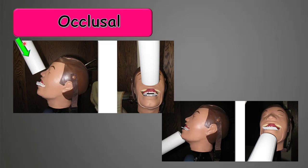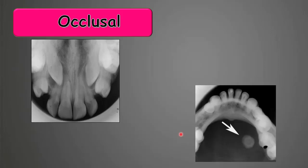With occlusal radiography, the film is placed inside the mouth in a horizontal position and you close your mouth. If the x-ray tube is from the top, you're taking a radiograph of the upper jaw; if the tube is from the bottom, you're taking it from the lower jaw. Occlusal radiography shows the roof or floor of your mouth and is used to find extra teeth or unerupted teeth, jaw fractures, and foreign objects — for example, you can see a salivary gland stone inside the salivary gland duct.